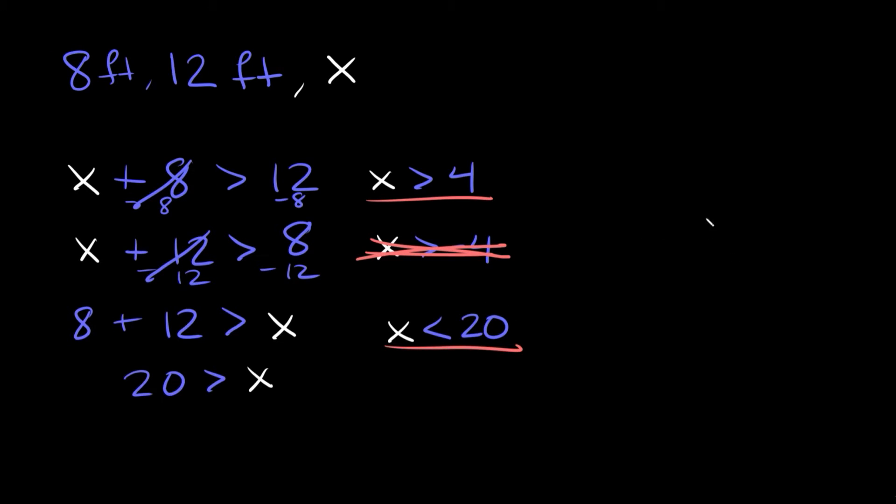Right, so that's the range. So if you wanted to you could write it as x is greater than 4 but x is less than 20. Okay, so this missing side can be any length that is between 4 and 20. All right, let's try one more here.